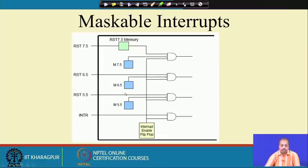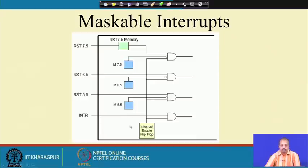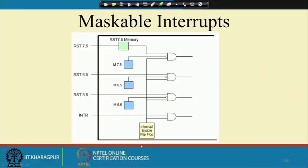If M 6.5 flip-flop is set to 1, the 6.5 interrupt will be masked off because the AND gate will get an input of 0 — whatever the value of RST 6.5, it will not reach the output. For INTR, there is no individual masking; INTR can only be masked off via the interrupt enable flip-flop through EI/DI instructions.